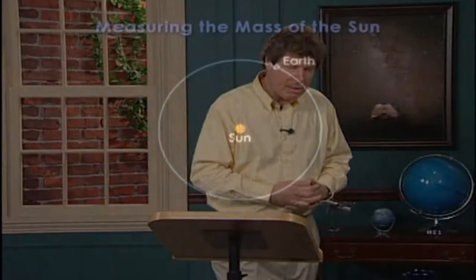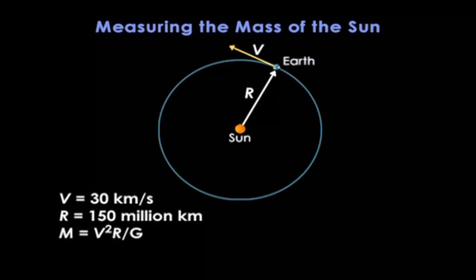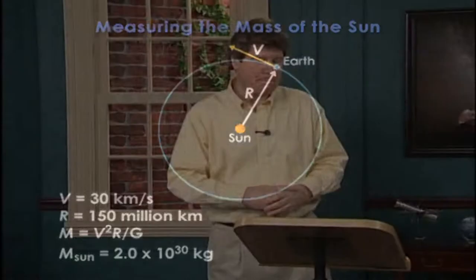First example: the Earth moves around the Sun at about 30 km per second in a roughly circular orbit with a radius of 150 million km. If you plug these numbers into the equation along with big G, you immediately find that the mass of the Sun is 2.0 times 10 to the power 30 kg. The Sun's mass is measured quite accurately.